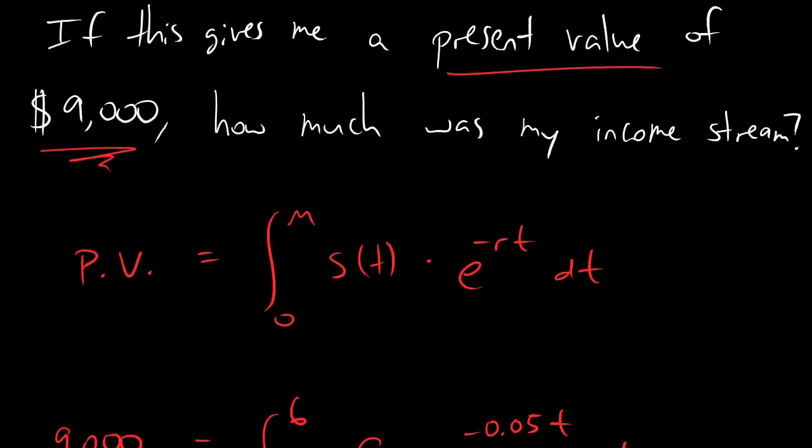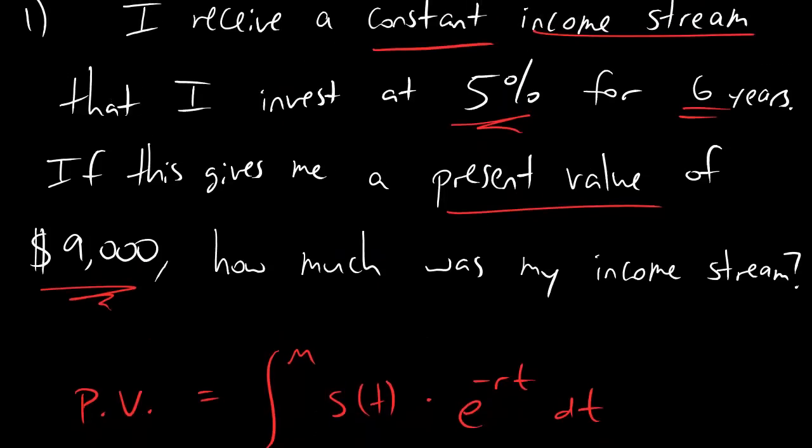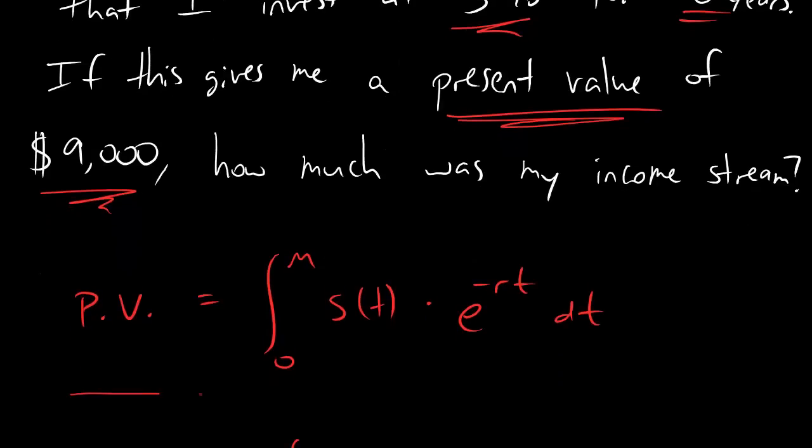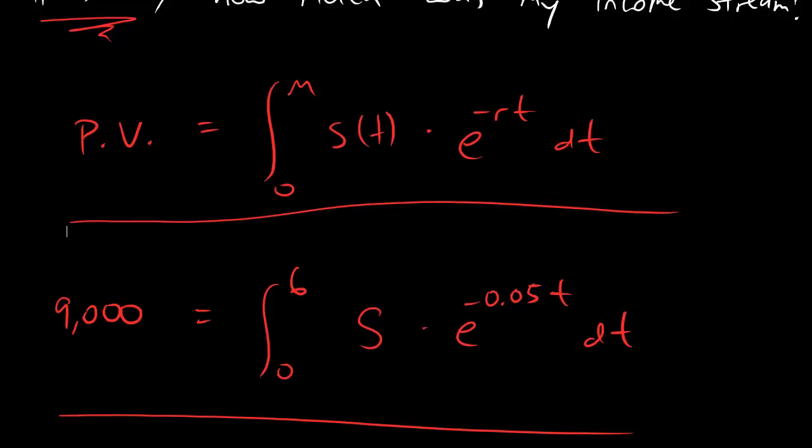So one more time, all we did for this puppy is we noticed that they were talking about an income stream and a present value. So we wrote down the present value formula for an income stream. Then we just plugged in all the crap that we could think of plugging in and solved for the unknown guy.